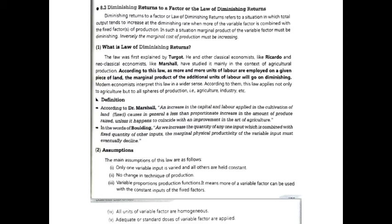Variable proportions production function means more of a variable factor can be used with the constant inputs of the fixed factors. All variable factors are homogeneous, meaning the efficiency of all variable factors is equal. Next, adequate or standard doses of variable factors are applied.